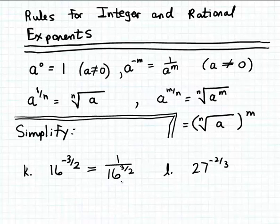Now we can just concentrate on the denominator here and simplify 16 to the 3 halves power. And we saw how to do that in the last video. We know that 16 to the 3 halves power is just another way of expressing a radical. That's the same as the square root of 16 cubed.